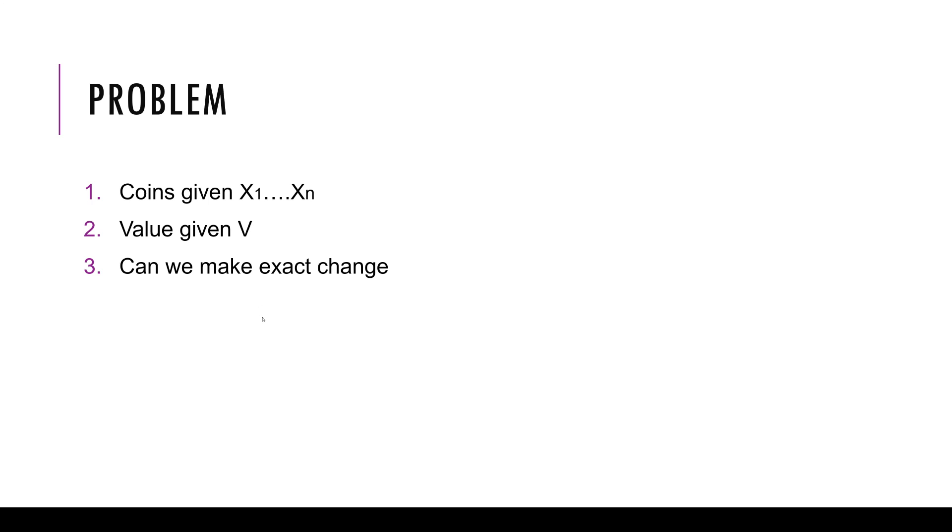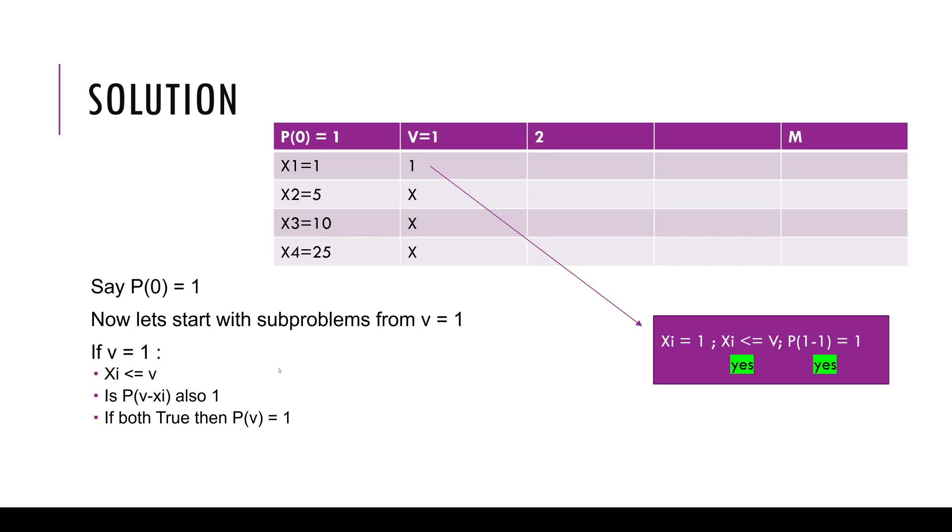So how do we use Dynamic Programming to solve this problem? The way we solve this problem is we make this familiar matrix notation. The way this matrix is set up is we're going to put the coins on the y-axis. In this example I've taken 1 cent, 5 cent, 10 cent, 25 cent. All these coins are on the left side, the y-axis.